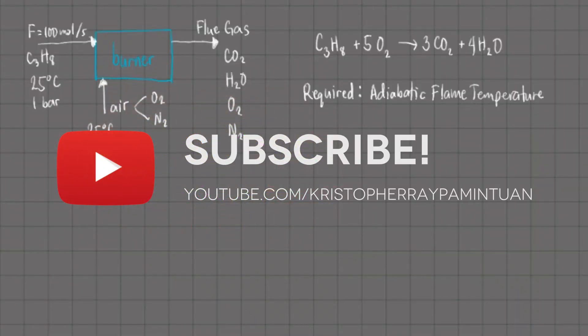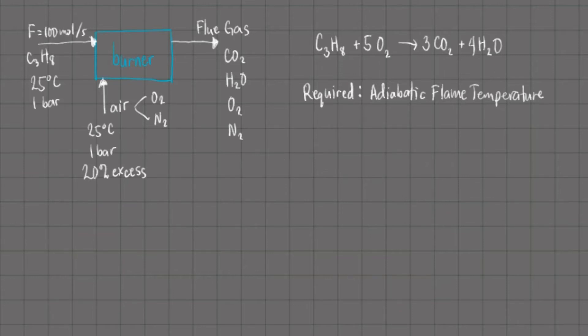Here we have represented our burner as accepting a feed of 100 moles per second of propane at 25 degrees Celsius and 1 bar, as well as 20% excess air assumed to contain oxygen and nitrogen, also at 25 degrees Celsius and 1 bar. Assuming complete combustion, our flue gas would only contain carbon dioxide, water, excess oxygen, and excess nitrogen, exiting at 1 bar. Our balanced combustion equation is: C3H8 + 5O2 → 3CO2 + 4H2O.